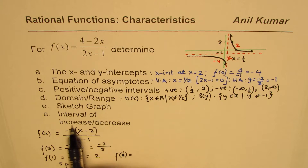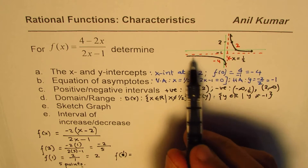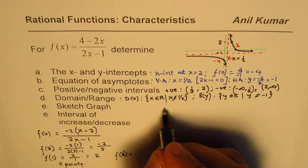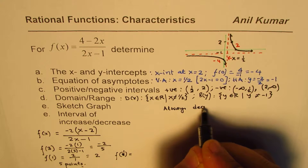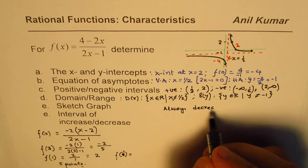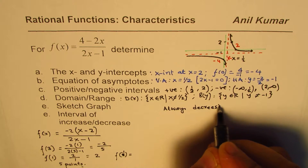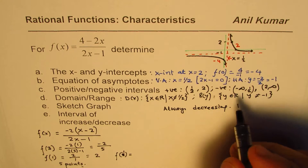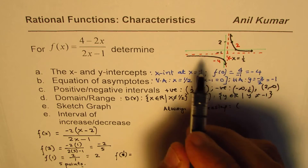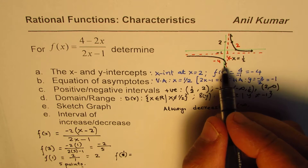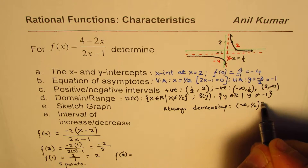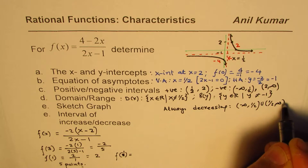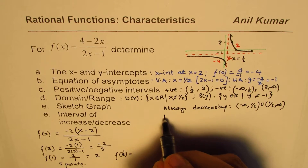For the interval of increasing and decreasing: this graph is always decreasing. The interval of decrease is from minus infinity to 1/2, and from 1/2 to positive infinity. It is always decreasing and never increasing.